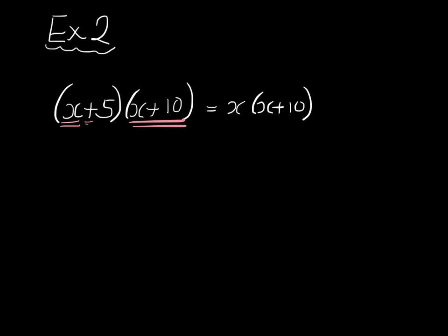And because we have a plus here, then we add 5 multiplied by the whole of this bracket, so 5 multiplied by x plus 10.